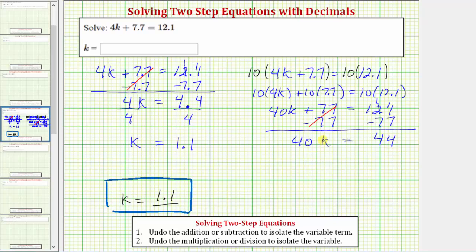Second step, undo the multiplication. So undo multiplying by 40, we divide both sides by 40. Simplifying, dividing by 40 undoes multiplying by 40, or 40 divided by 40 is equal to 1. 1 times k is k. Equals on the right side, we have the fraction 44 fortieths.